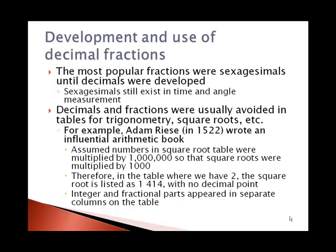Decimals and fractions in general were usually avoided in tables for trigonometry, square roots, etc. For example, an influential arithmetic book from the 1500s had tables for square roots where it was assumed the square roots were multiplied by a thousand and the numbers themselves by a million. So in the table where we have 2, that was actually interpreted to mean 2 million, the square root of that being 1,414. The integer and fractional parts appeared in separate columns of the table, but no decimal point was involved.